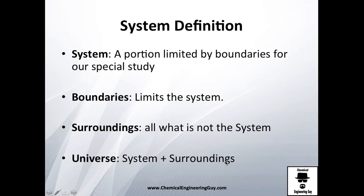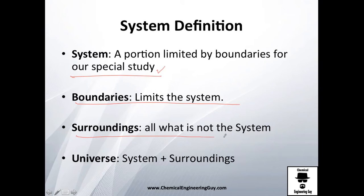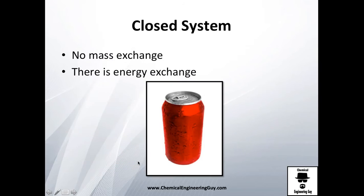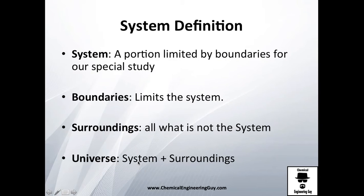So once again: a system is a portion limited by boundaries for our special study. The boundaries are essentially the limits of the system. Surroundings — I love this definition — is all that is not our system. And the universe is essentially our system plus surroundings. In the next video, we're going to see the types of systems.